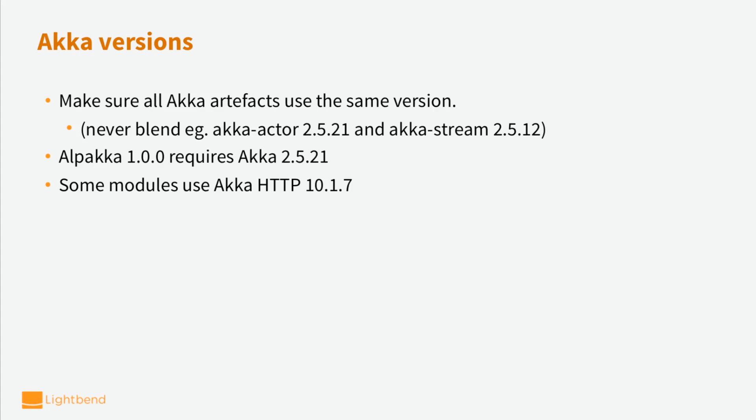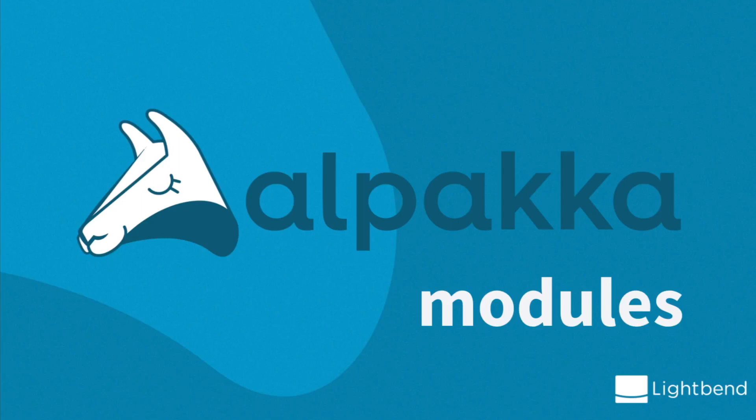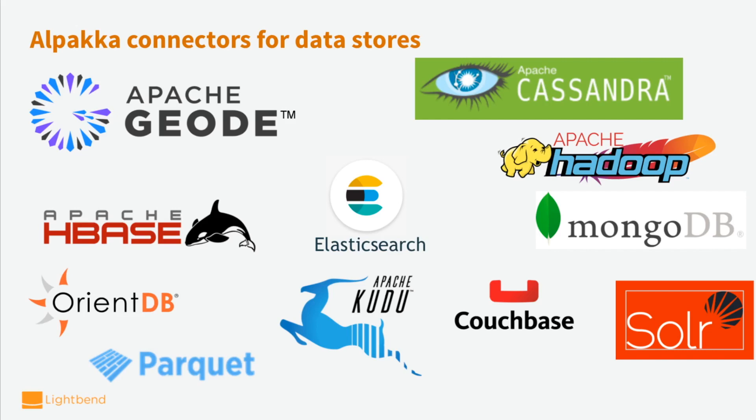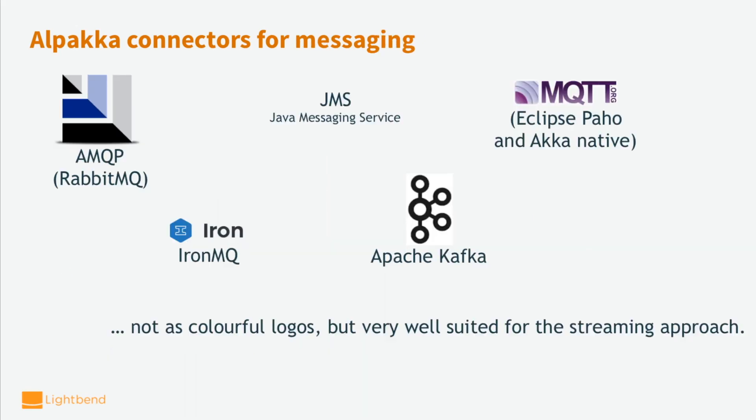Let's talk about what Alpaca contains — what modules are there and what technologies are supported right now. We have quite a few connectors to cloud services for all three major cloud providers: AWS, Google Cloud, and Microsoft Azure. There are also quite a few connectors for data stores in the Alpaca mix today, including MongoDB, Cassandra, Couchbase, and Elasticsearch, as you can see on this slide.